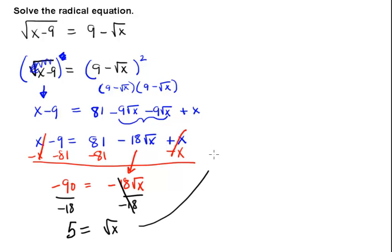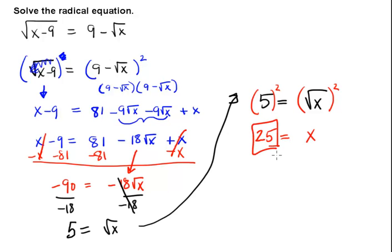I'm running out of room, so I'm going to scoot this up over here and finish off this problem. Let's now finally get our x by itself by doing the opposite of square rooting, which is squaring. If we square both sides of the equation, the left side becomes 25, and the right side becomes x. There's our final answer. Our final value for x is 25.